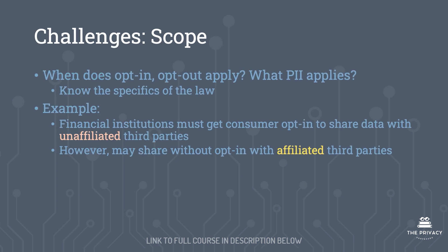With regards to scope, an important consideration is when does opt-in and opt-out apply, and what PII applies. The main takeaway is we need to know the specifics of the law — what data do we have, and what laws and regulations apply. For example, financial institutions must get consumer opt-in in order to share data with unaffiliated third parties; however, financial institutions may share data without opt-in with affiliated third parties.